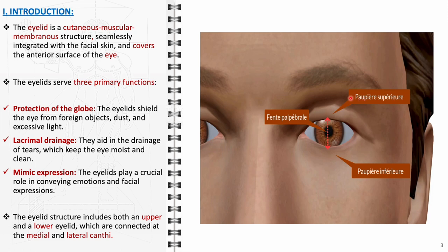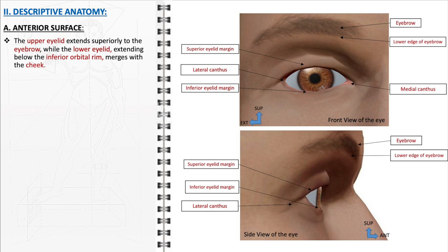The human eyelid structure consists of an upper and a lower eyelid, each contributing to the overall function of the eye. They meet at the medial and lateral canthi, the corners of the eye. The eyelids are composed of several layers: the outermost skin layer, which is thin and flexible; beneath it lies the orbicularis oculi muscle, responsible for blinking and closing the eye; deeper still is the tarsal plate, a firm strip of connective tissue; and the innermost layer is the conjunctiva, a mucous membrane that lubricates the eye.